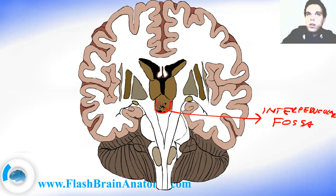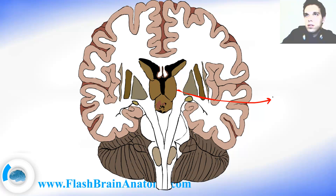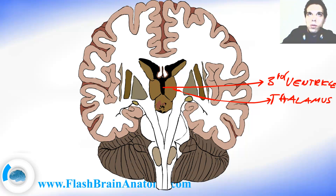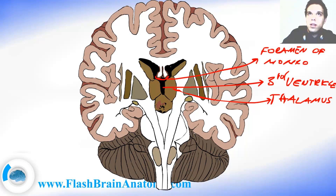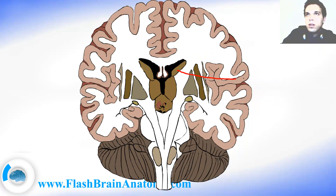And above the interpeduncular fossa, we had the thalamus. Between the two thalami, from the right and the left side, there is the third ventricle. Then we had the foramen of Monro connecting the ventricles. And we may not forget the lateral ventricle. The structure over here was called the caudate nucleus.